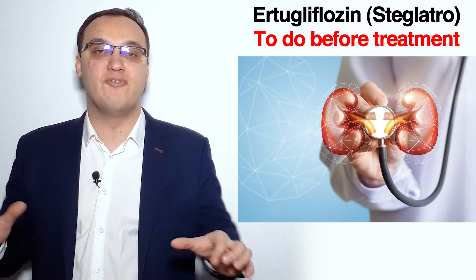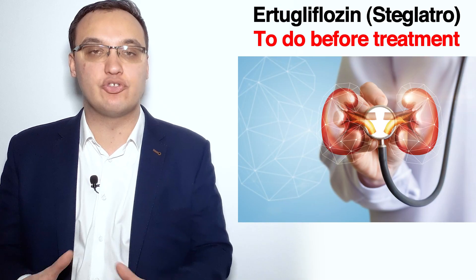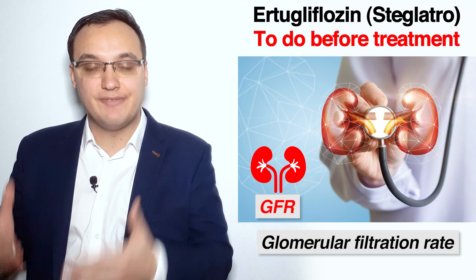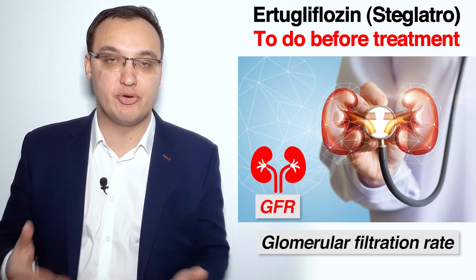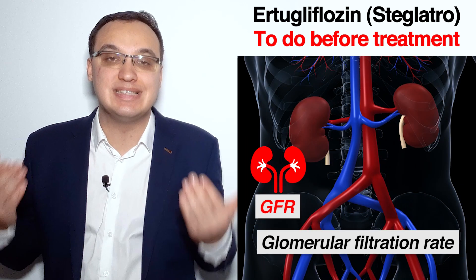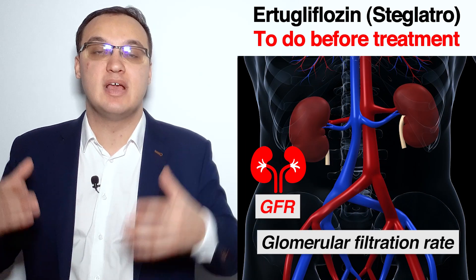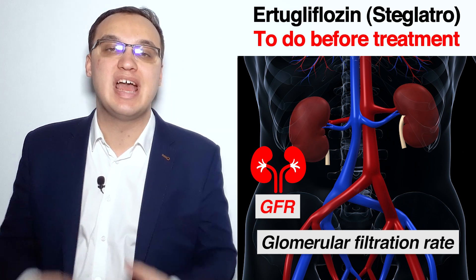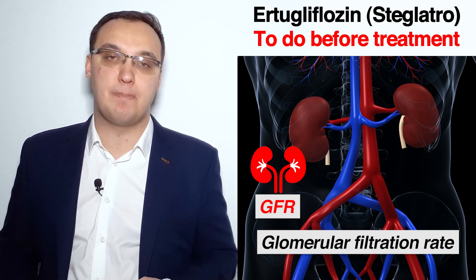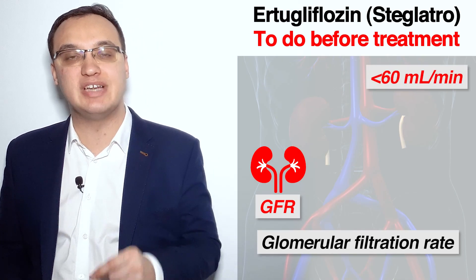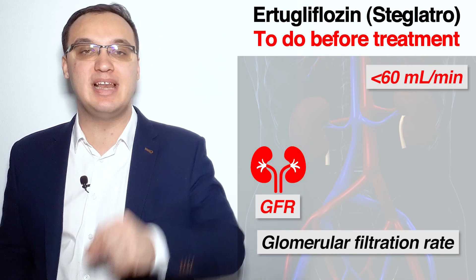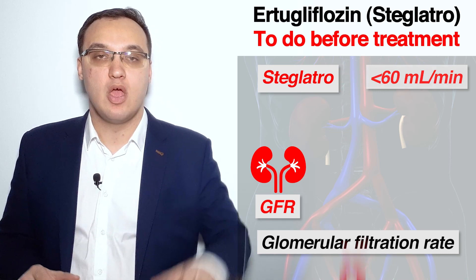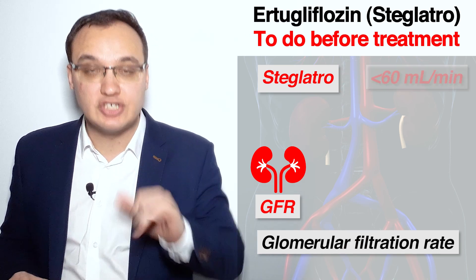It is also very important before starting Steglatro to check kidney values — namely GFR, which stands for glomerular filtration rate. In simple terms, this is the flow of blood through the kidneys measured in milliliters per minute. If the GFR is less than 60 milliliters per minute, then it is not recommended to start Steglatro.